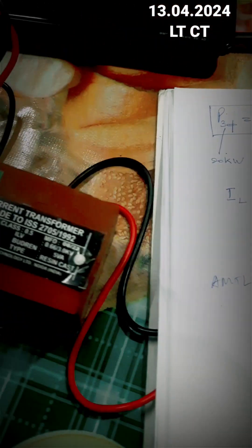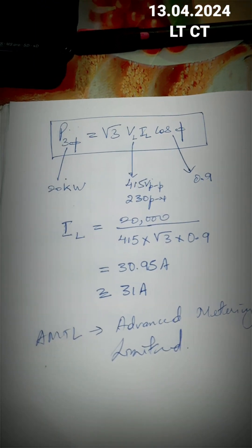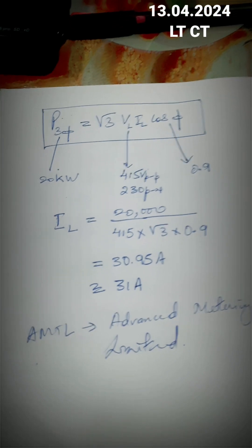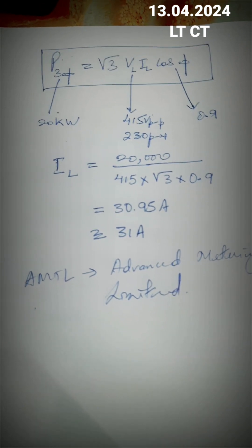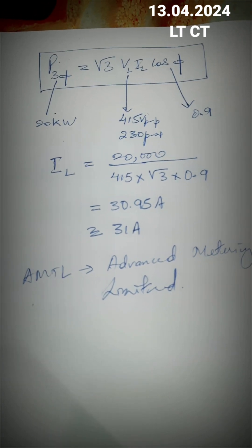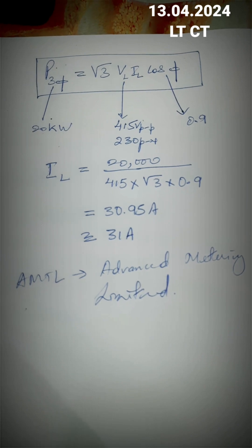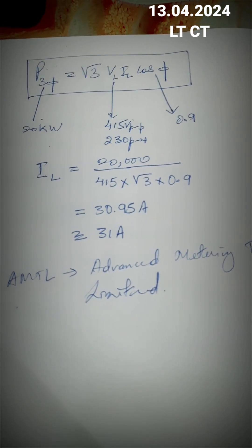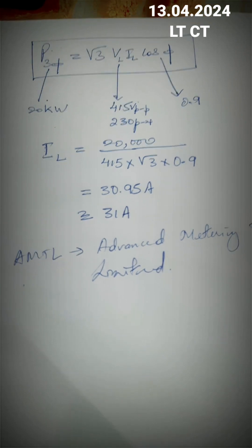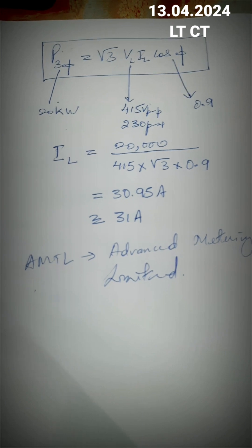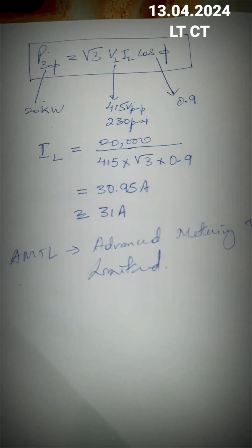Before we open this CT, let's do a calculation. This CT is used for connected loads of 15 to 22 or 23 kilowatt. The three-phase power formula is: P = √3 × VL × IL × cosφ, or equivalently 3 × Vphase × Iphase × cosφ. Taking VL as 415 volt and power factor as 0.9, the line current works out to 31 ampere. So we need a CT rated higher than 31A — that is a 50 ampere primary rating — giving us the 50 by 5 CT ratio.